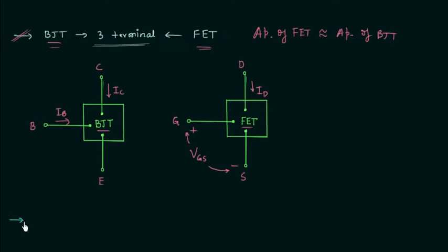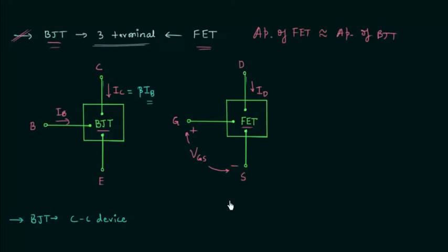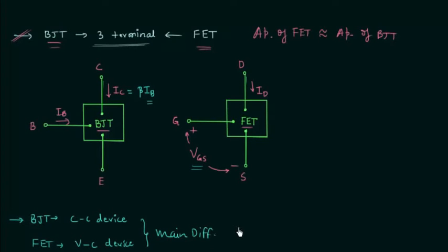The next major difference is that BJT is a current control device, but FET is a voltage control device. In a BJT, the output current IC is purely based upon the input current IB, so IC is defined in terms of IB — hence it is called a current control device. But in a FET, the output current ID is purely based upon the input voltage VGS, which is the gate-source voltage, so FET is called a voltage control device.